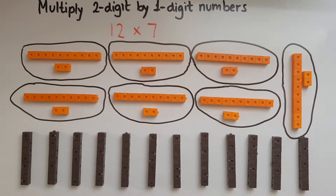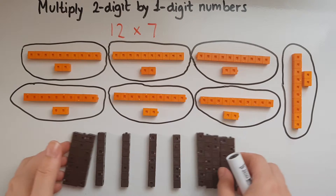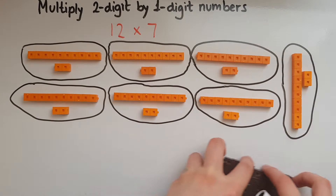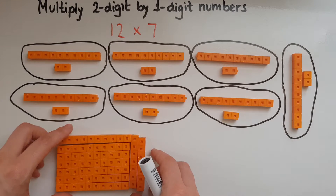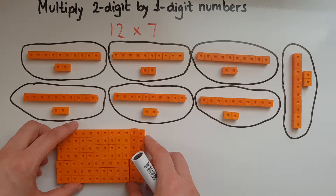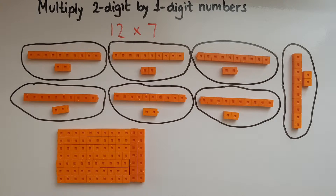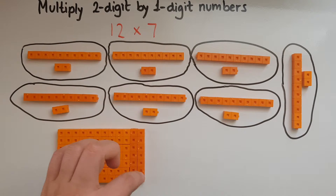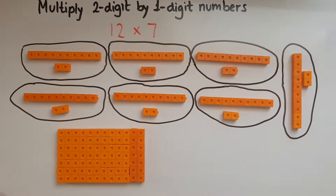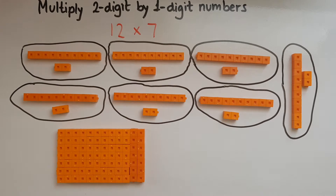I'll show you one more way of representing 12 times 7. I've got 12 columns of 7 each, but I've also got 7 rows of 12 each. So this is just another way to show it, and we'll go through the method of working this out as well.